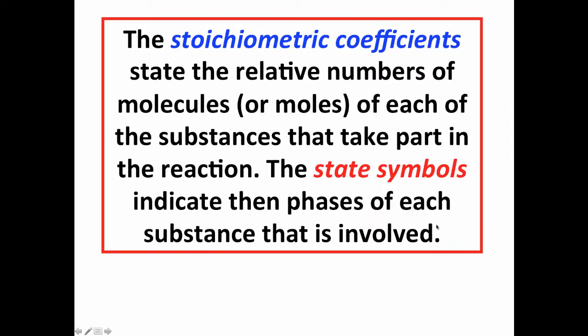We have what are called stoichiometric coefficients that tell us the relative numbers of molecules, or on a larger scale, of moles of those substances that take place in the reaction. Those are the two and the one, the coefficients out in front, and then we also have state symbols that indicate the phases of each substance involved. So here the stoichiometric coefficients are 2, 1, and 2, respectively. And then parentheses G means that hydrogen, oxygen, and as it's produced, water are all gases. And of course, if we let it cool down, water would eventually turn into a liquid, which we would symbolize by L.